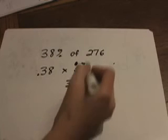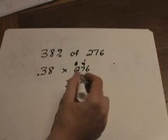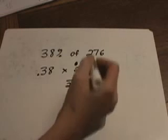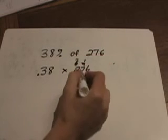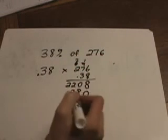6 times 3 is 18. Carry the 1. 7 times 3, 21, plus 2 is 22. 2 times 3 is 6, plus 2 is 8.